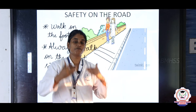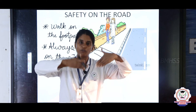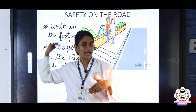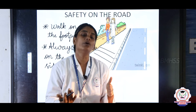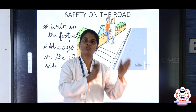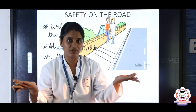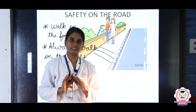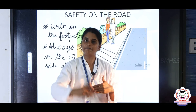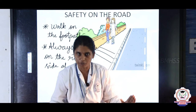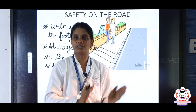Why walk on the right side? Because you can see the vehicles coming from the front. If you walk on the left side, vehicles move forward on the left side and may come from behind — you won't know a vehicle is coming and they may hit you. That is why, when there is no footpath, walk on the right side so you can see oncoming vehicles. If a large vehicle like a lorry comes, you can move away from the road and be safe, then continue forward.